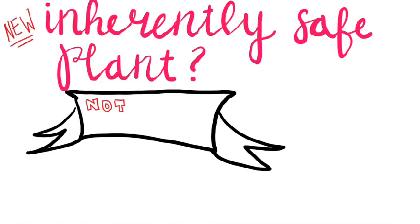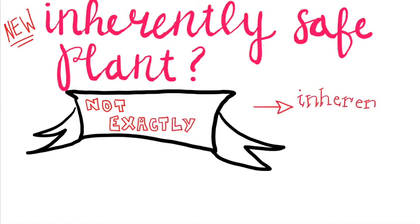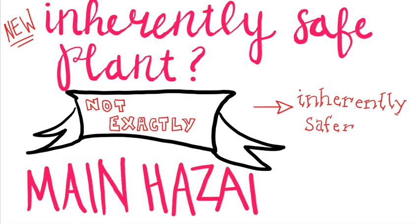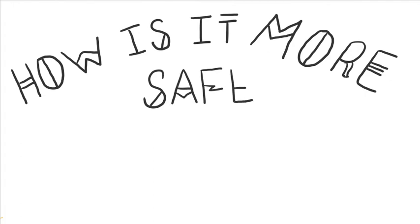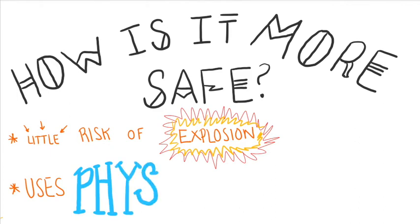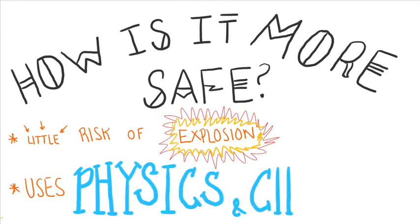So is this process inherently safe? Not necessarily, but it is inherently safer. The main hazards involved with this process are corrosivity and the generation of gas. Now there is little or no risk of explosion. This process is safer because it relies on chemistry and physics of the process to make it safer.